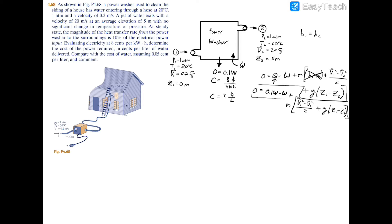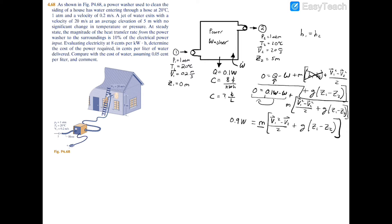Moving the power term to the other side of the equation, we get 0.9 times the power equals the kinetic energy term — the squares of the velocities divided by two — times the mass flow rate, plus gravity times z1 minus z2. Dividing both sides by 0.9 isolates the power, and dividing mass flow rate by 0.9 eliminates it from the power variable.